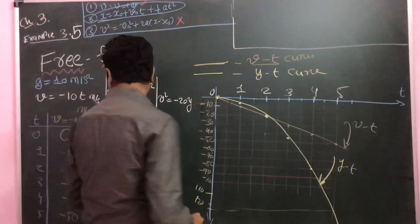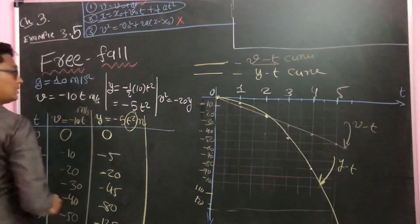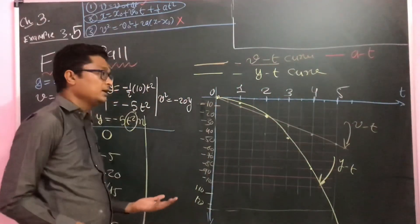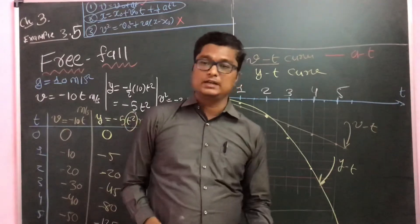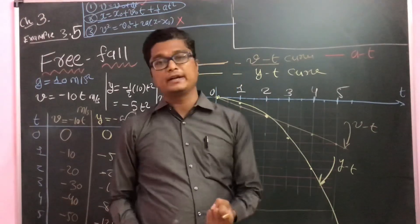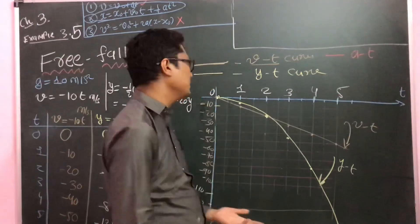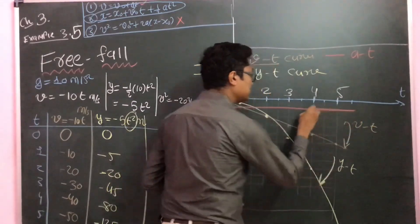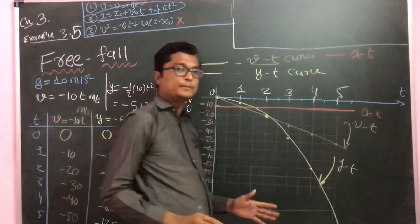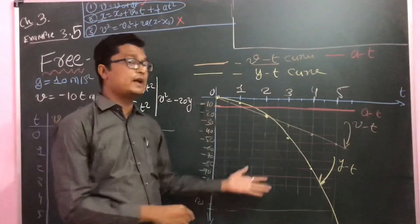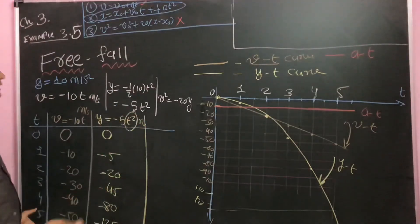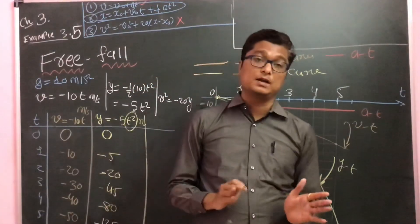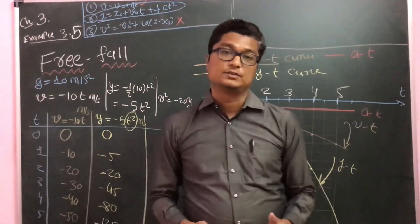Now the third graph: acceleration versus time. Since acceleration is constant at minus 10 meters per second squared, it is a straight horizontal line. This represents the a-t graph. I hope you have understood all three graphs — try to do it on your own and you will enjoy this. Thank you so much.